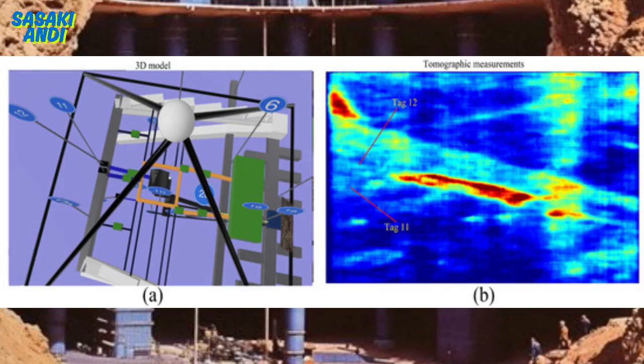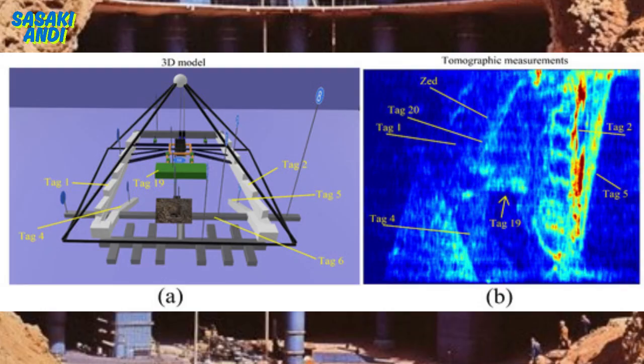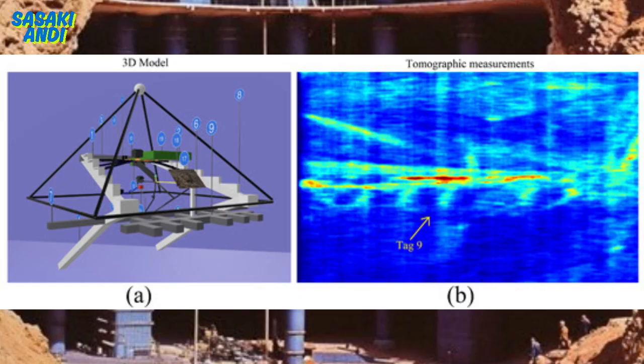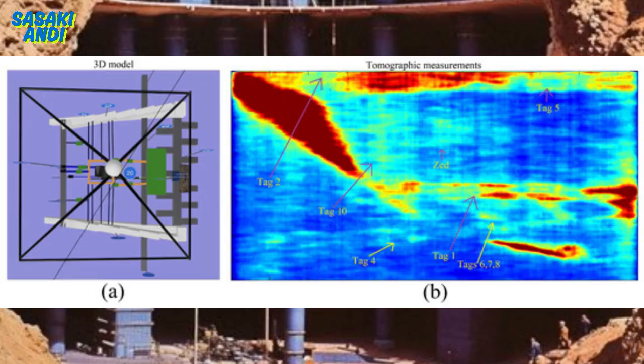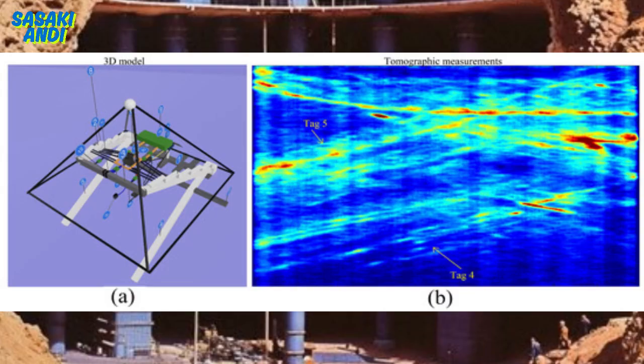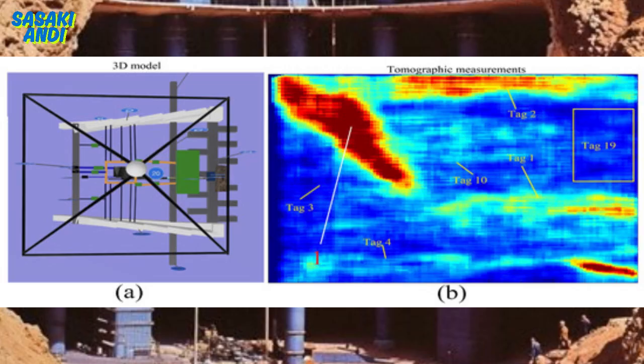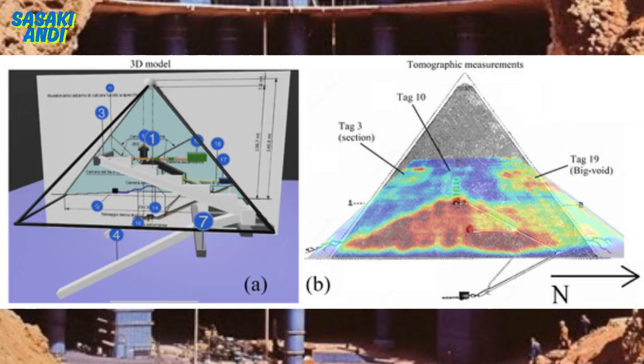The researchers believe these ramps could have been used during the construction process to move those massive stone blocks up to higher levels. That makes sense. Internal ramps would definitely make it easier to move those heavy blocks. Exactly. And then there's this horizontal corridor, tag 3, called the southern corridor, that connects these two ascending ramps at a significant height on the southern side. Now this corridor could have been used for a couple of things. It might have been a pathway for moving materials horizontally once they reached a certain level, or it might have served some kind of ceremonial or logistical purpose after the pyramid was completed. So they might have been using these internal ramps and corridors like some kind of ancient Egyptian highway system for construction. Right. And that just highlights the incredible planning and ingenuity that went into building these structures.